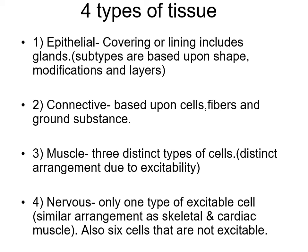The four types of tissues: number one is epithelial tissue - it's a covering and lining tissue that includes glands, with subtypes based upon shape, modification, and cells. Connective tissue is the second type, based upon cells, fibers, and ground substance. Third is muscle tissue - we have three types: skeletal, cardiac, and smooth. Fourth is nerve tissue, which has only one type of excitable cell, the neuron.